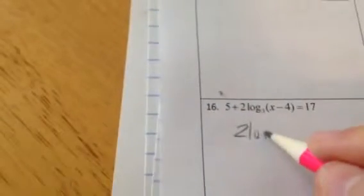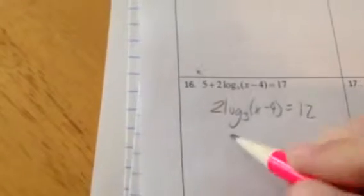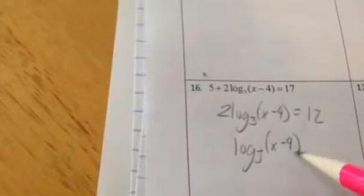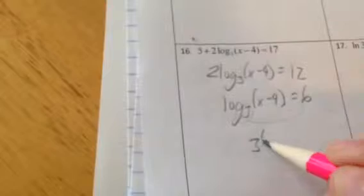We keep going. Get rid of the 5 first so we can get this log alone. And 12 log base 3 of x minus 4. Divide by 2 you get 6. Now again, just rewrite it in its exponential form. 3 to the 6 equals x minus 4. Add the 4. So 3 to the 6 plus 4 will be x. That's nice and positive. So, and if you subtract 4, it'll be 3 to the 6, which is positive. So there it is. You can use the calculator to figure out what that is. But we'll leave it there for now.